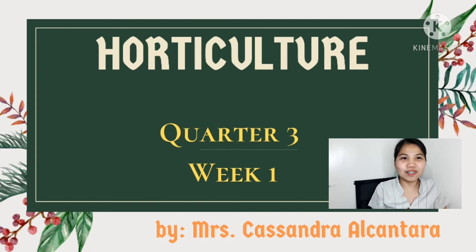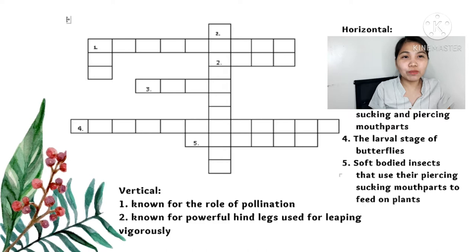Let's begin with a crossword puzzle. Let's see how good you are in words and meanings. Let's take the vertical words first. It is a three-letter word known for the role of pollination.